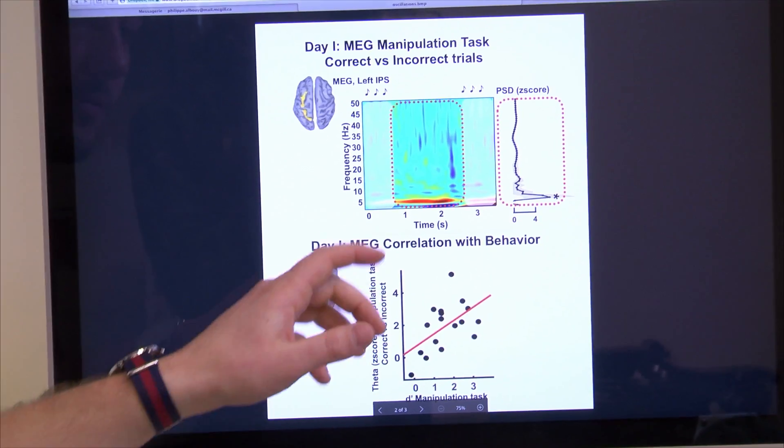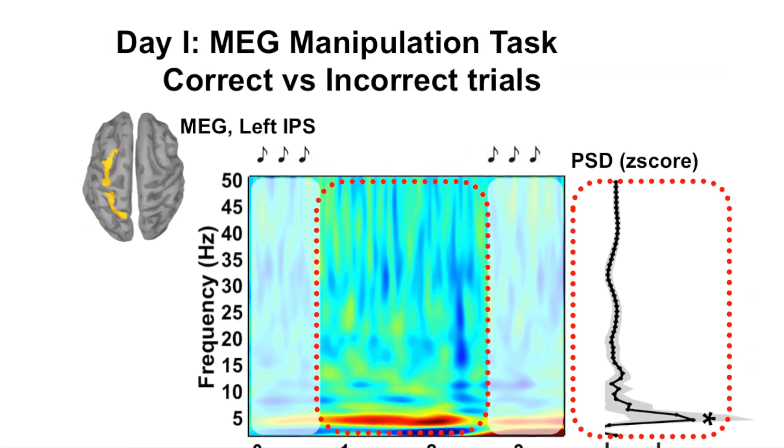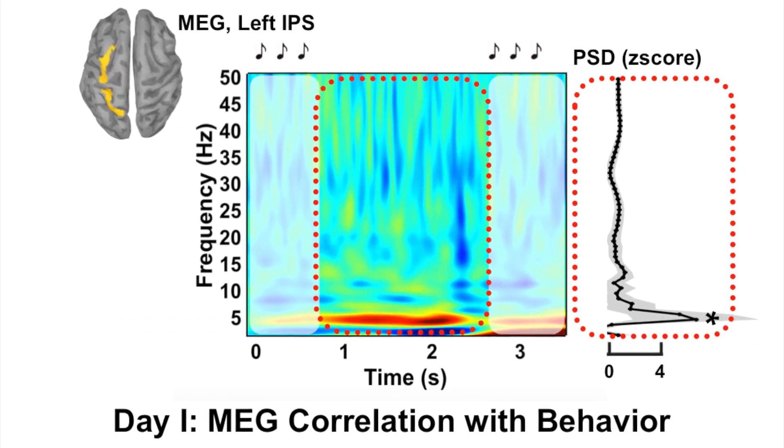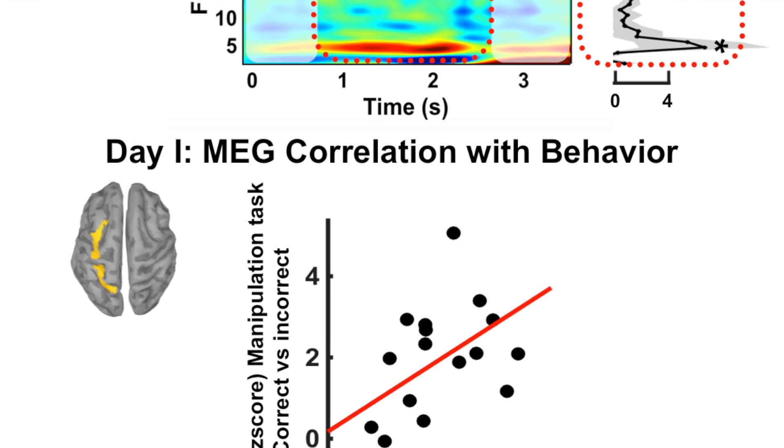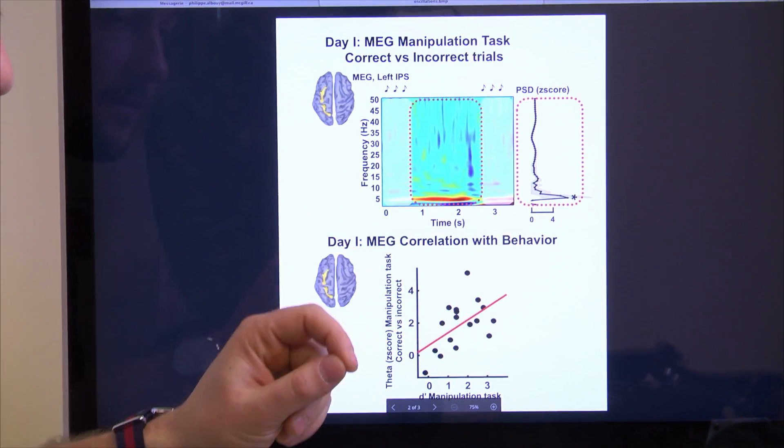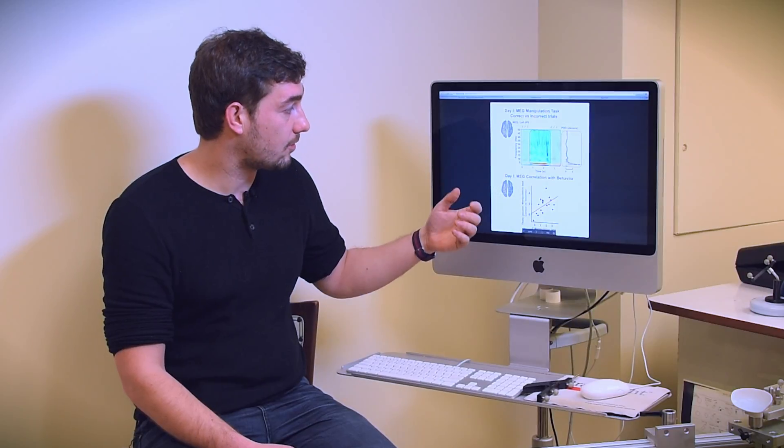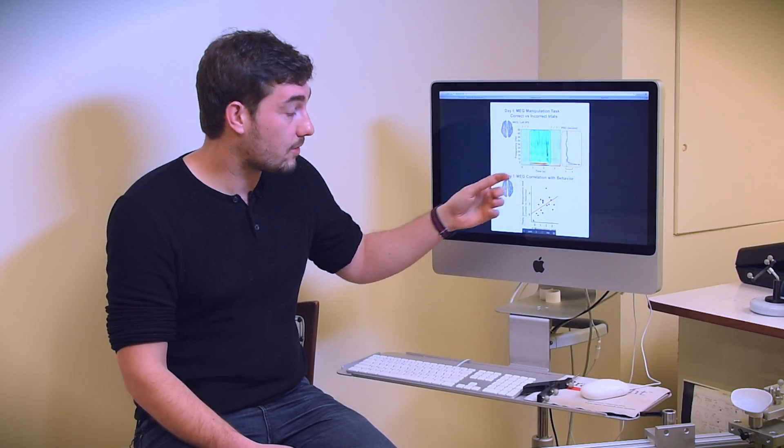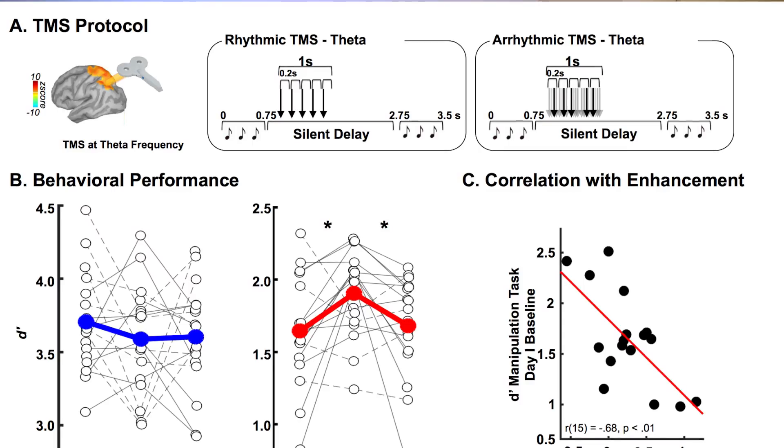This was a way of controlling the effect of the stimulation. We observed that theta activity—5 Hz—during the retention period, when manipulating information in memory, emerged more in the manipulation task compared to the simple task. What was really interesting is that this theta activity predicts participants' behavioral performance: the more theta the brain generates during the retention period, the better participants perform the task.